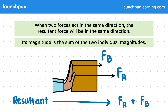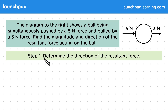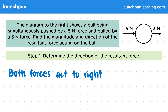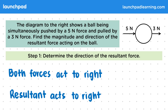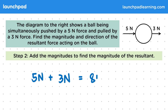Let's have a look at another example. The diagram to the right shows a ball being simultaneously pushed by a 5N force and pulled by a 3N force. Find the magnitude and direction of the resultant force acting on the ball. For step one, we want to determine the direction of the resultant force. As we can see in the diagram, both forces act to the right, so the resultant force also acts to the right. For step two, let's add the magnitudes: 5N plus 3N equals 8N.